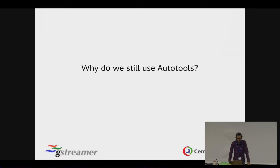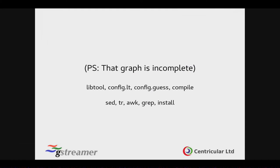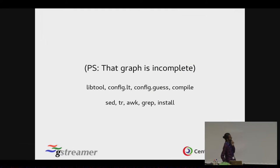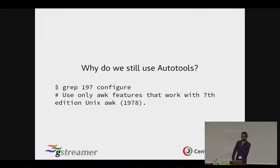Why is that? This is roughly what AutoTools looks like. I bet half of these things are stuff we never even think about, and the rest is stuff we want to not think about. And this graph is incomplete. Did you know that configure still requires an AWK from 1978? It tests for that. So we have great backward compatibility, I guess.